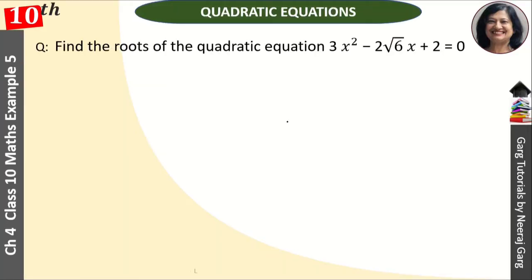Hi, this is Neeraj Garg and you are watching class 10th chapter 4 quadratic equations. Find the roots of quadratic equation 3x square minus 2 root 6x plus 2 is equal to 0.